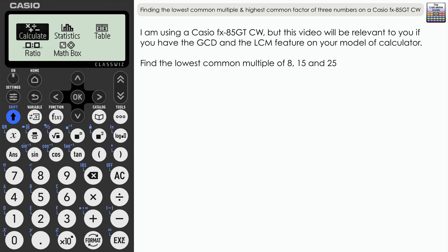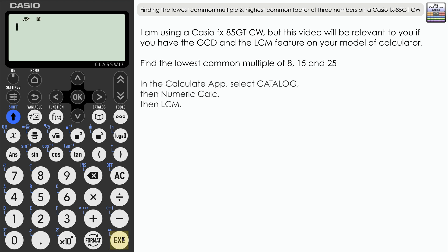I will show you how to set that up on your calculator, relevant for three values. From home, select Calculate and then select Catalog. Navigate to Numeric Calc and you can see it's the top two options that we have here on the calculator: GCD and LCM.